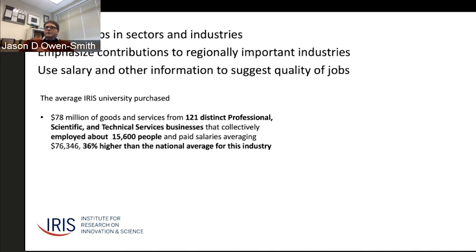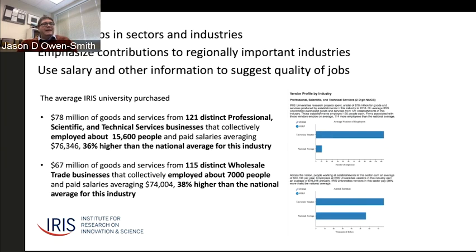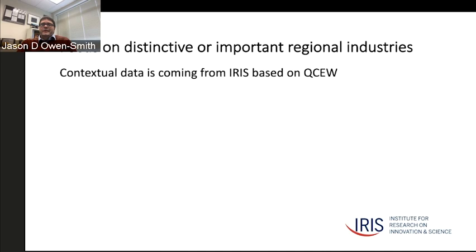The average IRIS university, for instance, purchased $78 million from 121 distinct professional, scientific, and technical service firms. According to Census data that we link, those firms employed an additional 15,600 or so people in this industry, and their salaries were about 36 percent higher than the national average. So while it's not the purpose of science funding, we can lay out in quite specific terms how the research work of universities is touching people employed in lots of other sectors and having a secondary impact on economic development.